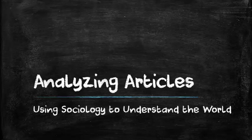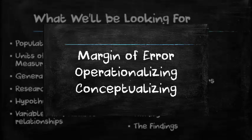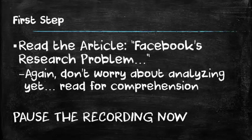Now in this lecture series there's a lot of information that we're going to cover. In the first part we did cover population frames, generalizability, how to identify the research question, reliability, and validity, and along with that we also covered some additional concepts: the margin of error, operationalizing, and conceptualizing. In this particular lecture we're going to cover ethics and the peer review process. So let's get a start.